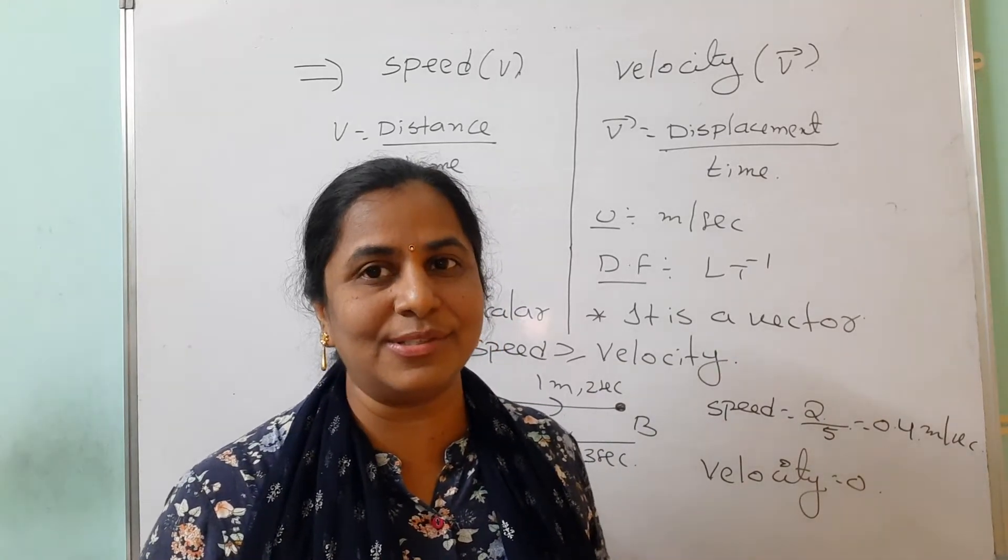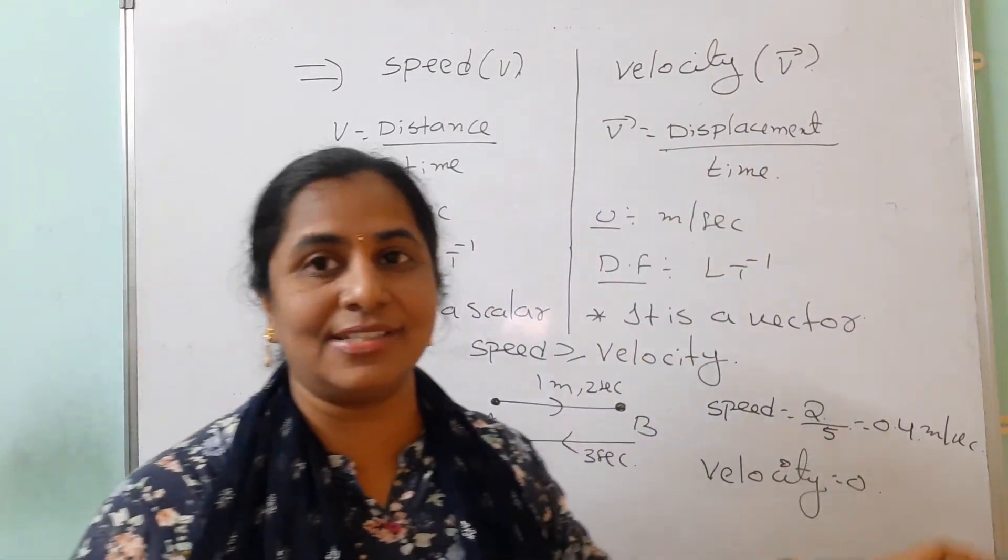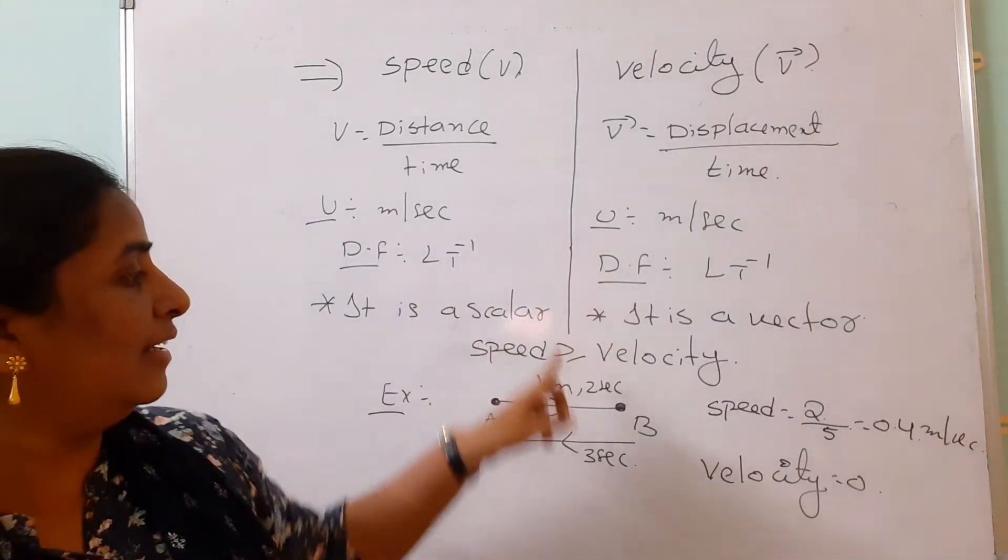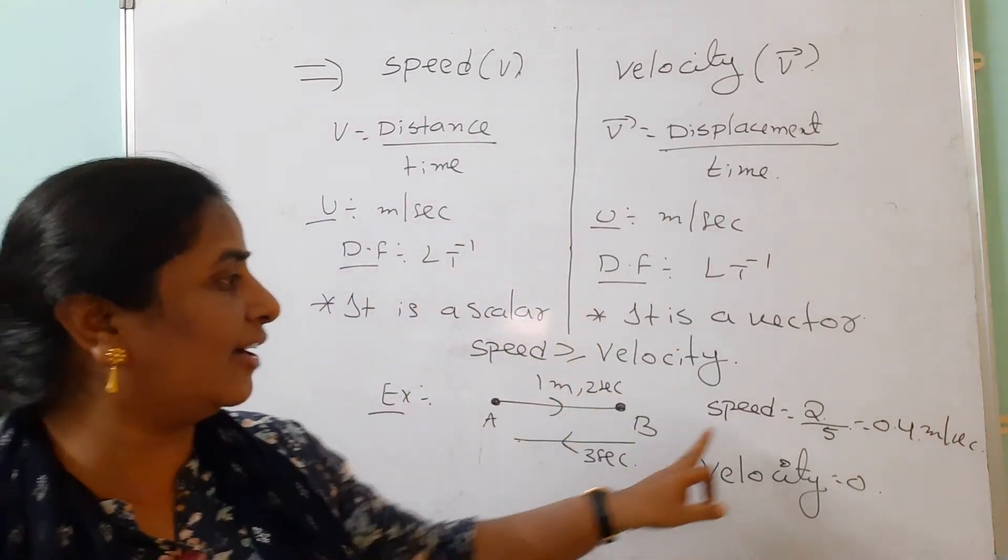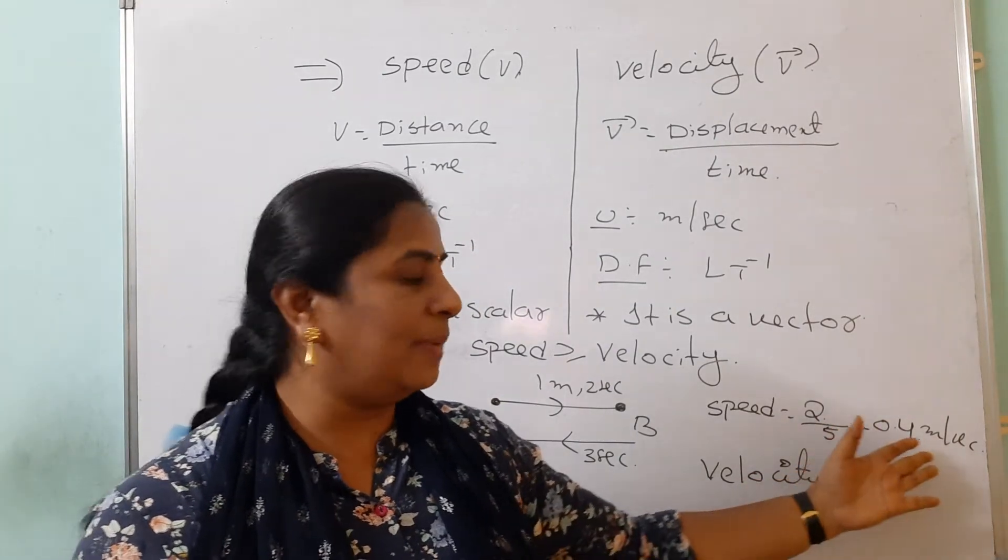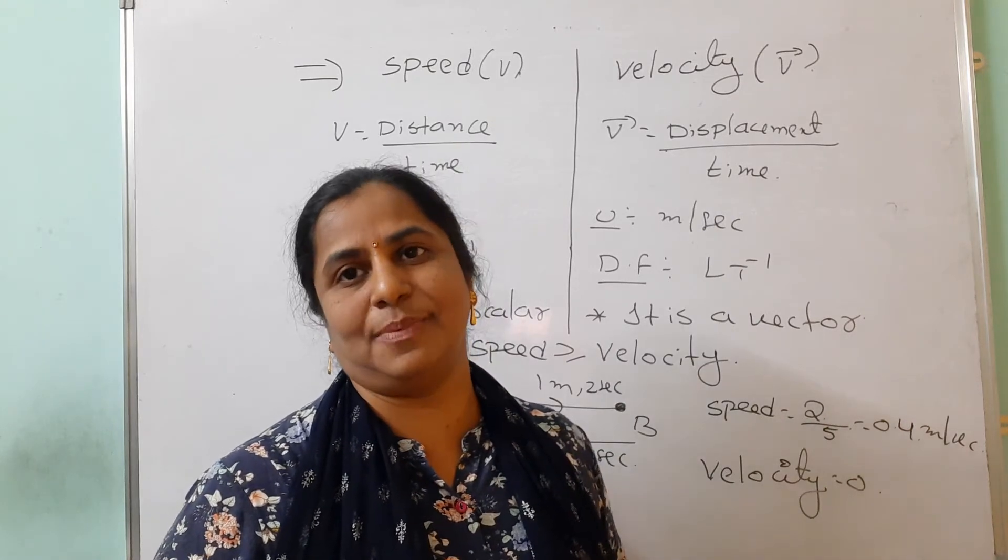But in this case, speed is still there. Why? Speed formula is total distance by time. Your total distance is one plus one, which is two meters, and the time is five seconds. So total speed is 0.4 meters per second, but the velocity is zero meters per second.